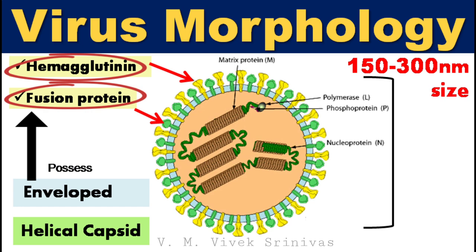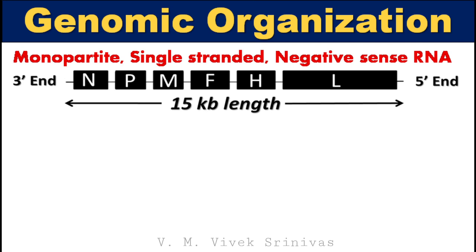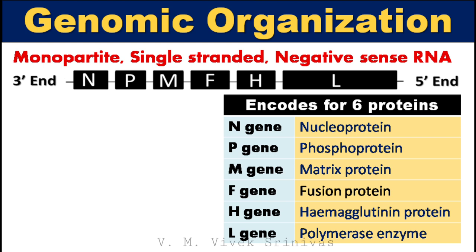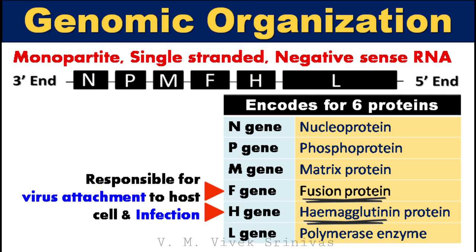Genomic organization: The genome is monopartite, single-stranded, and negative-sense RNA, with a length of 15 kilobase pairs. The viral genome encodes nucleoprotein, phosphoprotein, matrix protein, fusion protein, hemagglutinin, and polymerase enzyme. Diagnostic tests mainly target the nucleoprotein (N-gene) for identifying the viral antigen. Hemagglutinin and fusion protein are the immunodominant proteins that play a major role in antigenicity, binding to host cell receptors and causing infection and pathogenesis.